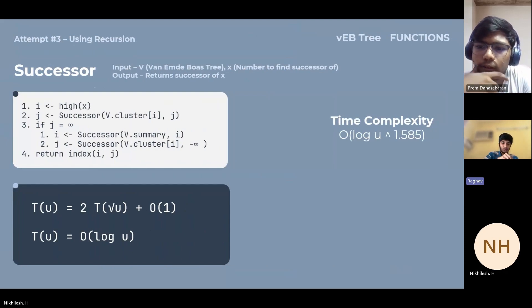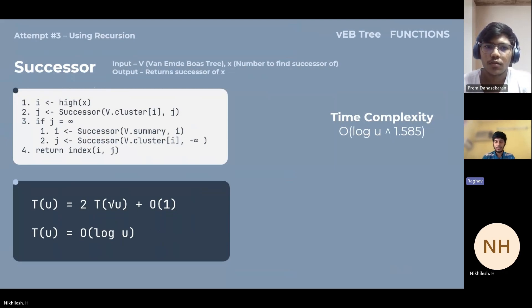Coming to the successor, you're going to first find the successor within the cluster recursively, and if it's not found, you go to the summary vector and recursively iterate through the summary vector till you get the successor and return the index. This has a time complexity of log u to the power 1.585.